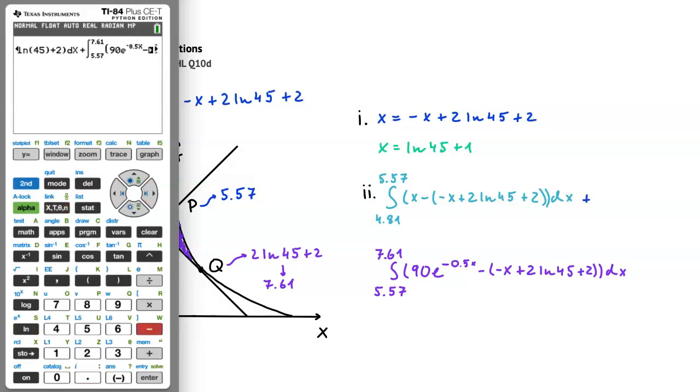Press minus, open a bracket, and enter negative x plus 2 ln 45, once again paying attention to closing the brackets, and then finally adding 2. Before we complete our dx, we have to close another bracket here, which just reminded me that we forgot to close this same bracket after the 2 in our first integral. Let me scroll back and close this bracket now.